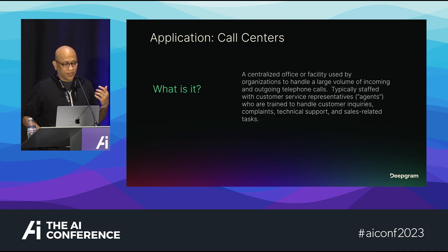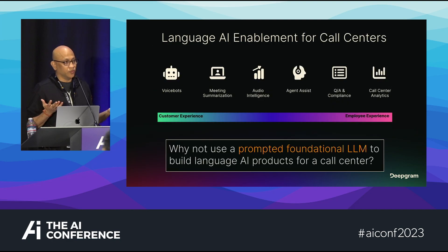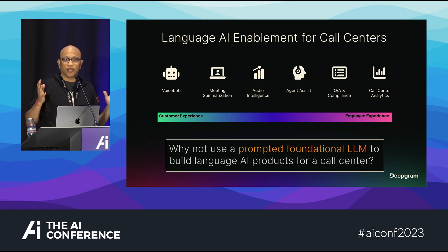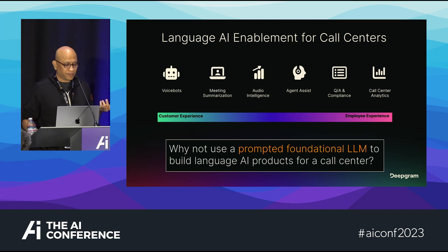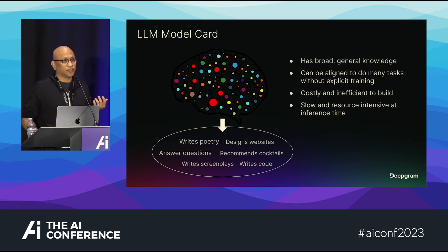We've all been on the receiving end of a call center. We're trying to create voice bots, meeting summarization, audio intelligence, and all of these things. We started with: why not use a promptable foundational LLM for this? It has broad general knowledge applicable to all sorts of call centers, and it's so versatile it can write poetry or code — it's an incredible technology. But it is costly and slow.